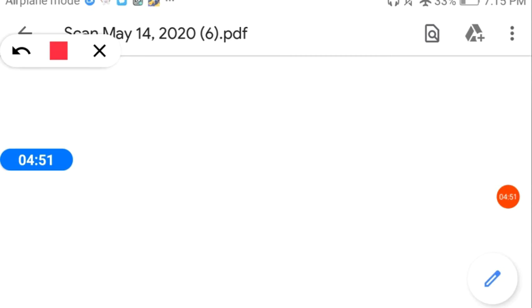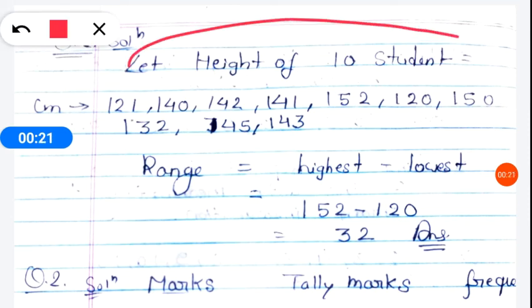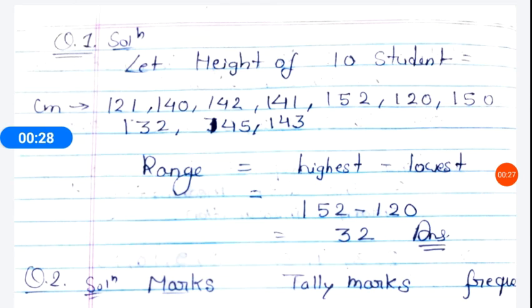Already I have told you how range is found. Range is found by highest term minus lowest term. So suppose we have to solve the question. So what was the first question? We have to find range. So here we will let the height of 10 students. The heights are not given, so we will let it ourselves. So this is in centimeters.